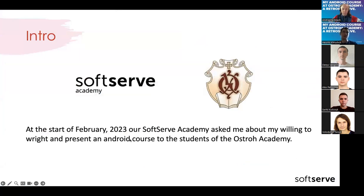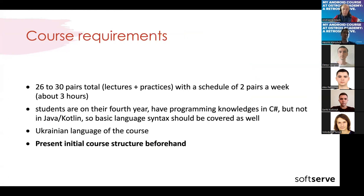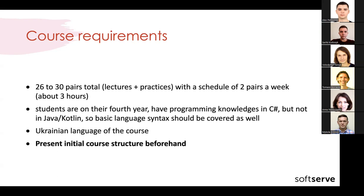At the start of February 2023, our Softserve Academy asked me about my willingness to write and present an Android course to the students of the Astro Academy, and as you might guess, I agreed to do that. Let's move to the course requirements. There should be 26 to 30 pairs total — lectures and practices — with a schedule of two pairs a week, which is about three hours. Students are in their fourth year, having programming knowledge in C-sharp but not in Java or Kotlin.